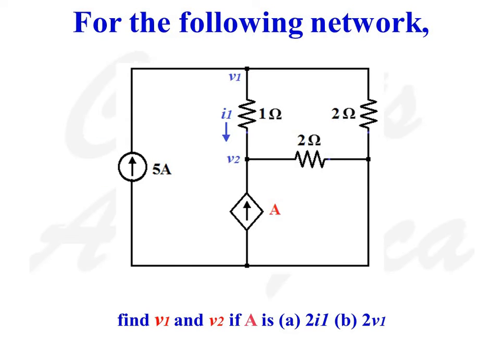For the following network, find V1 and V2 if A is 2I1 and 2V1.